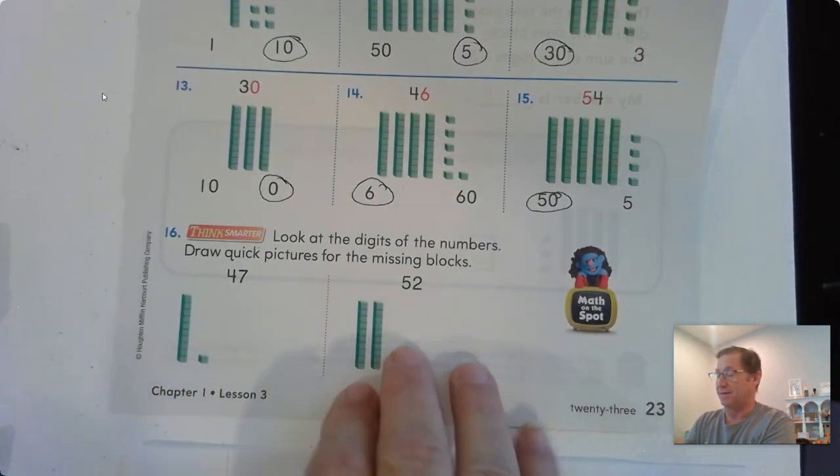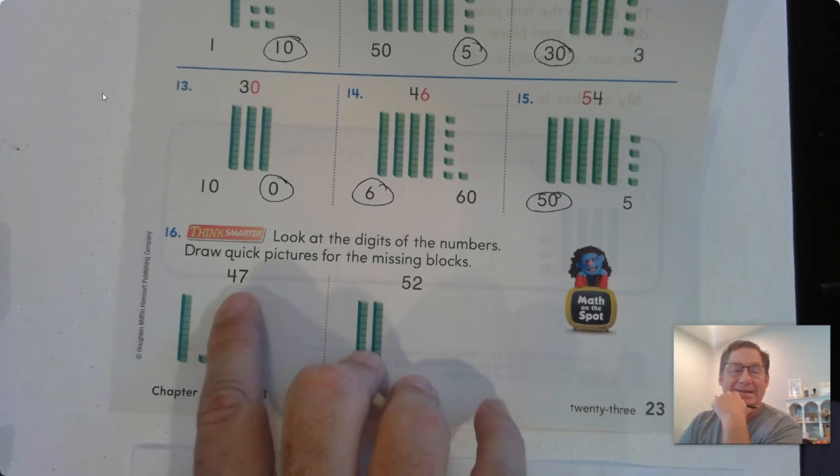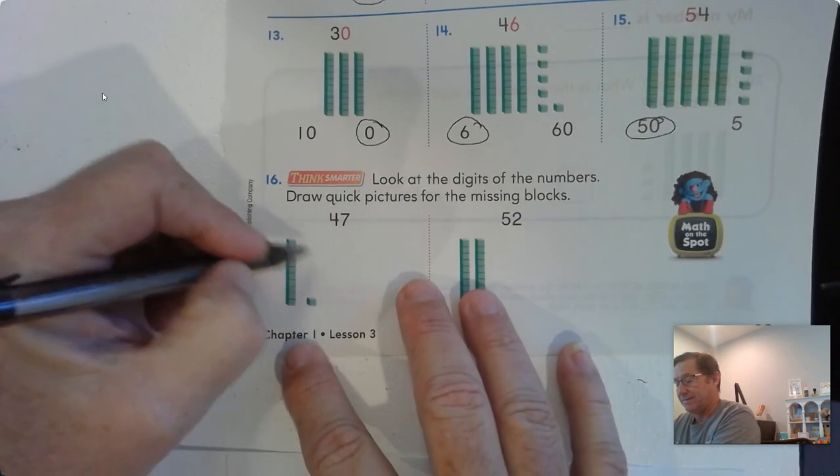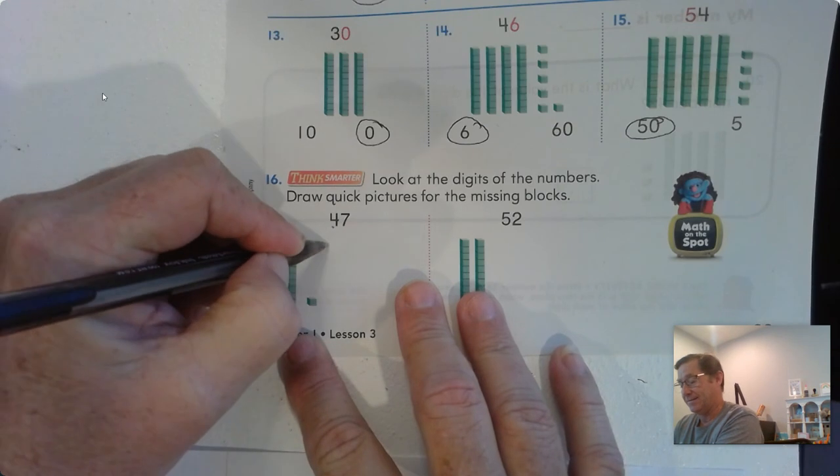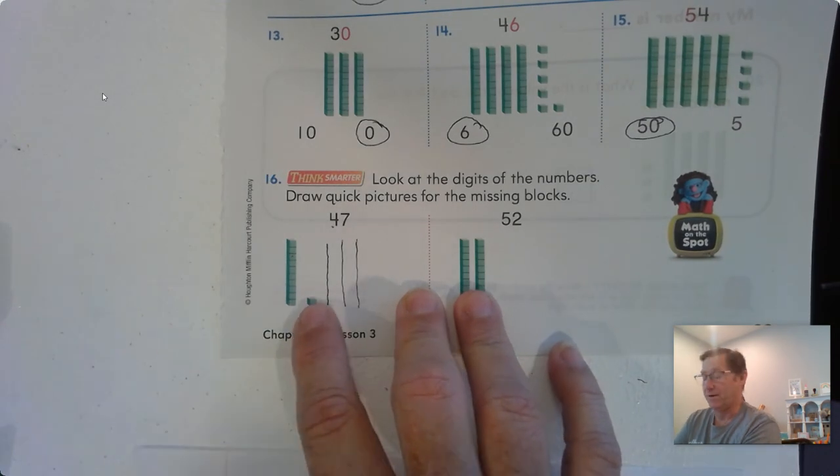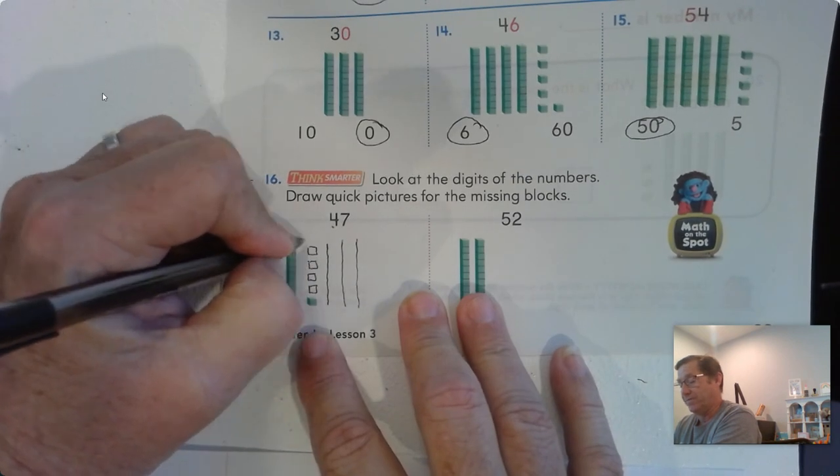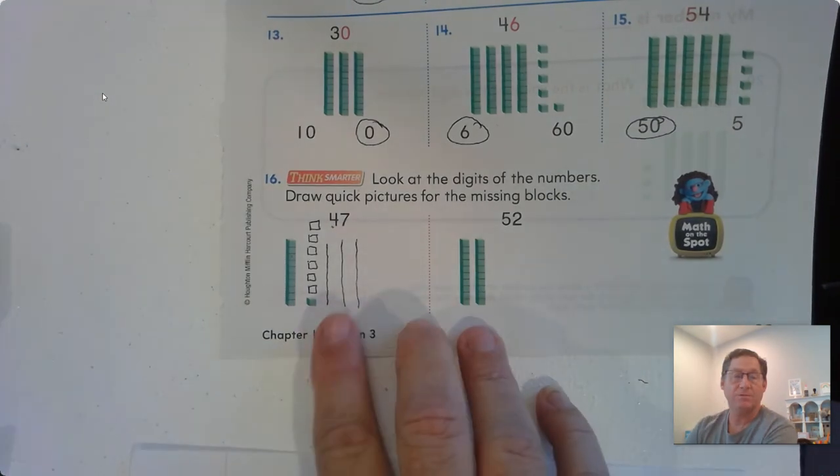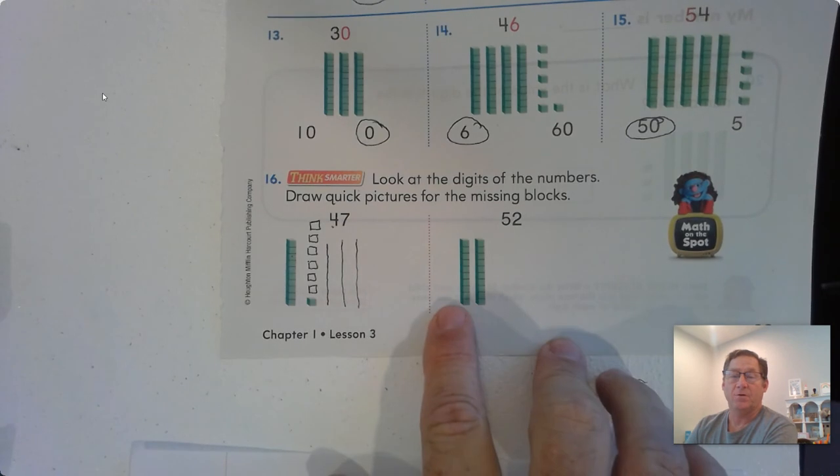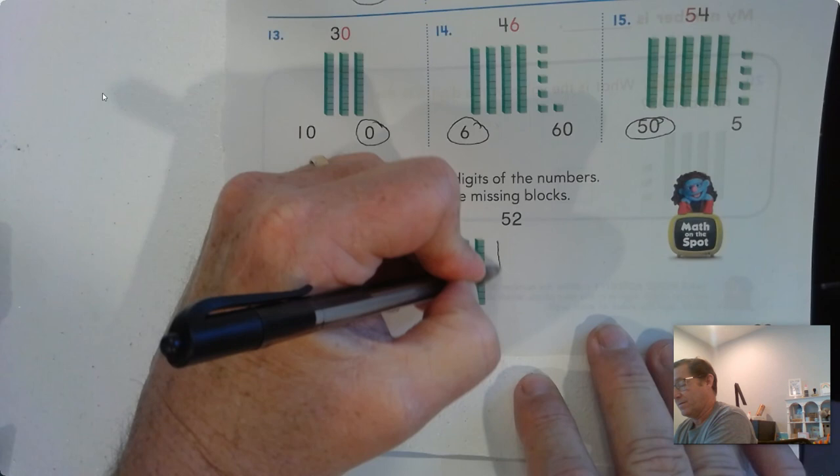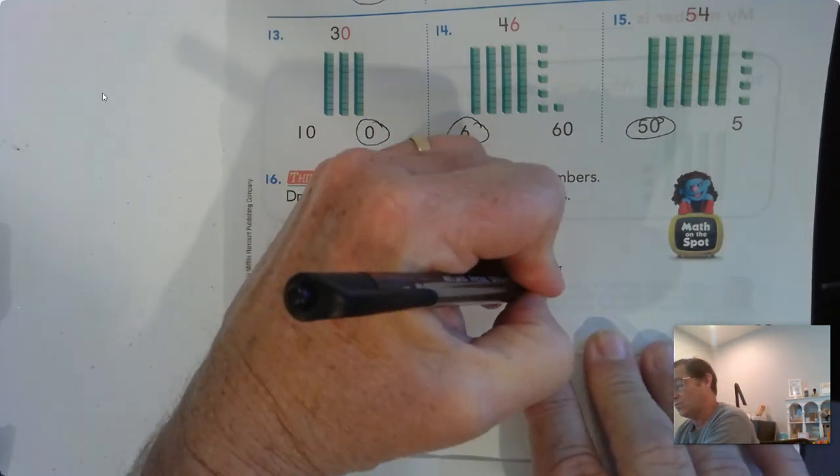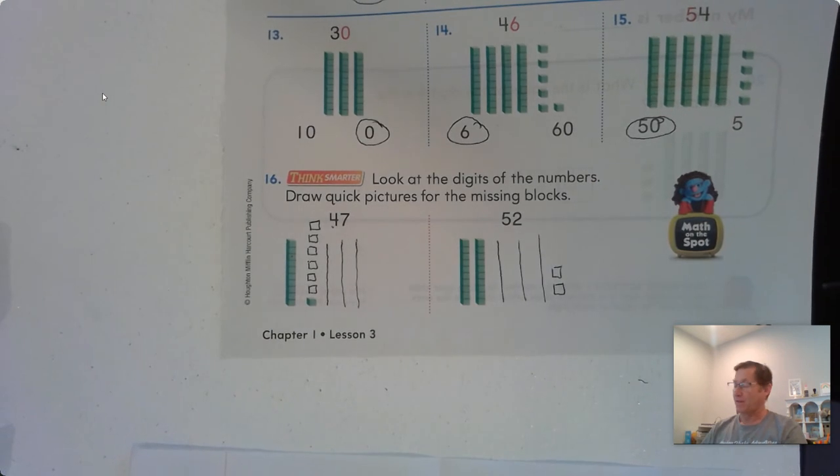Number 16: Look at the digits of the numbers. Draw quick pictures for the missing blocks. Problem 47. We can represent these 10 bars with just a straight line. We need 4 tens: 10, 20, 30, 40. And how many ones do we need? 7 ones. Right now we only have 1, so we need 1, 2, 3, 4, 5, 6, 7. Problem 18: 52. We have 2 tens but we need 5 tens - 3, 4, 5. And we have 2 ones.